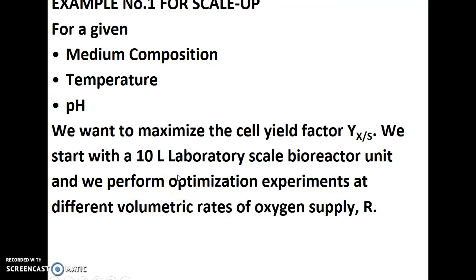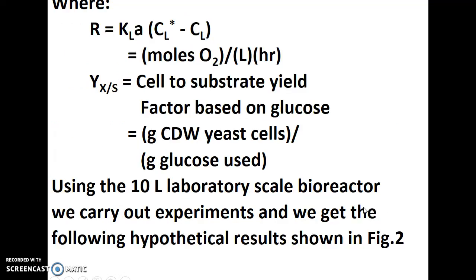Let us take an example for scale-up. For a given medium composition, temperature and pH, our objective is to maximize the cell yield factor, which is the yield of biomass with respect to substrate. We start with a 10-litre laboratory scale bioreactor unit and perform optimization experiments at different volumetric rates of oxygen supply, expressed as R. The volumetric flow rate of oxygen is given as a diffusion equation where the driving force is concentration difference, and KLA is the volumetric mass transfer coefficient of oxygen. Yx/s is the yield of biomass with respect to substrate.